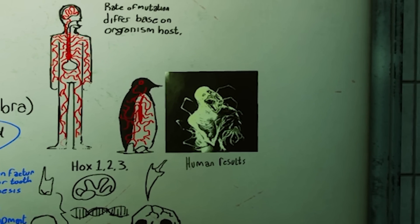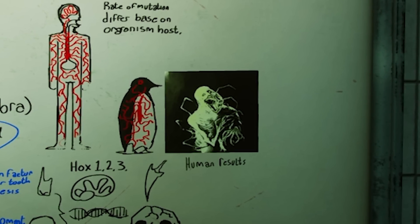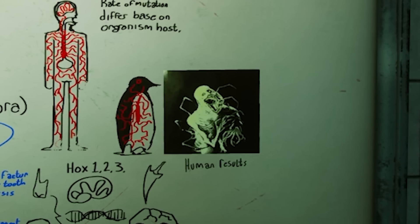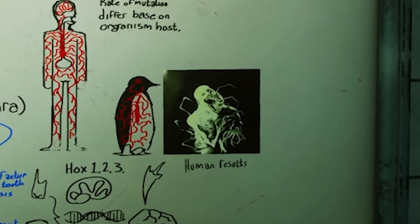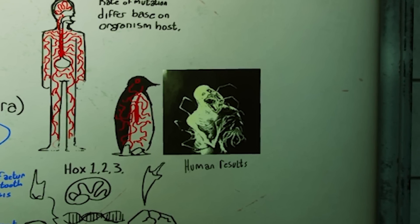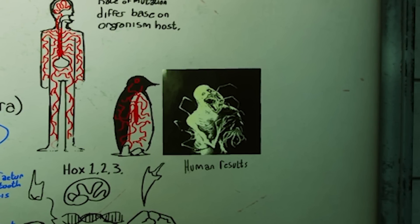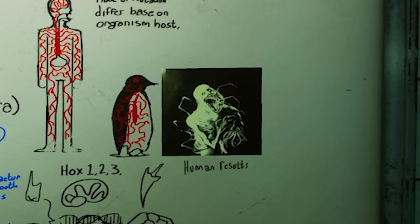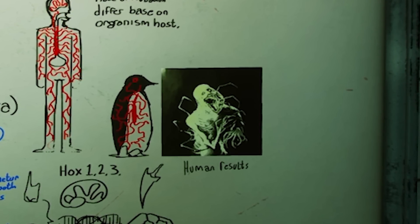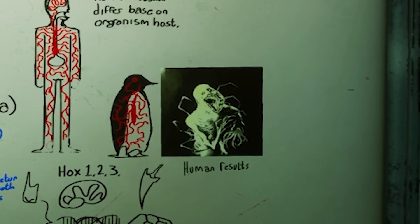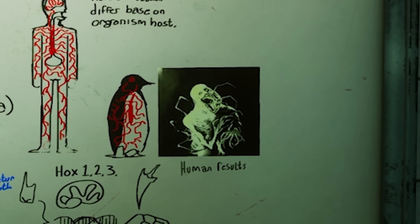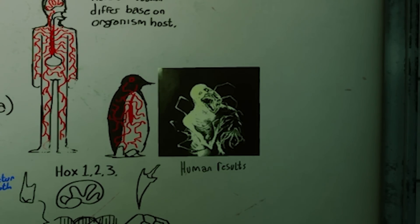The mouth will become enlarged as the teeth grow long and sharp. The human will also grow spider-like legs out of its back, and its hands completely transform. The hands, legs, and mouth are similar to that of Mother. After mutating, they only crave meat.